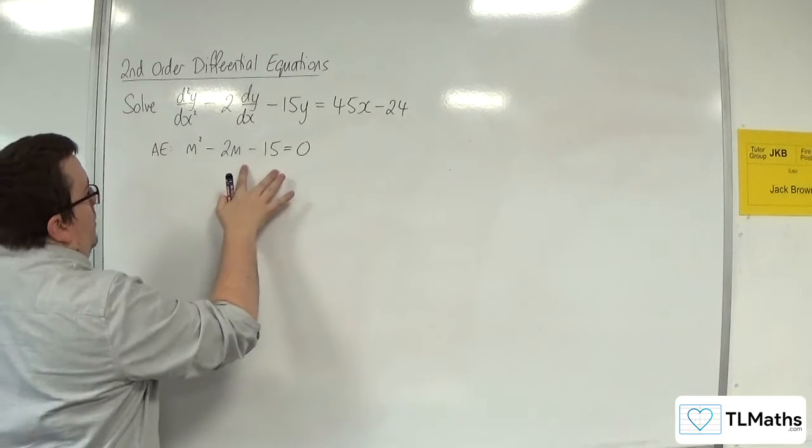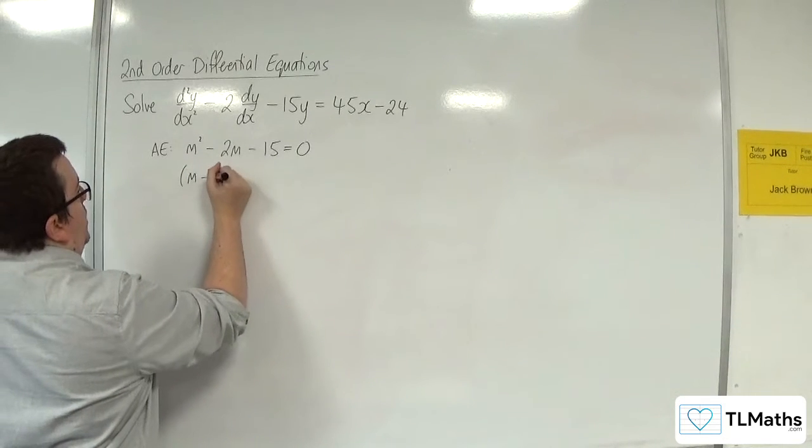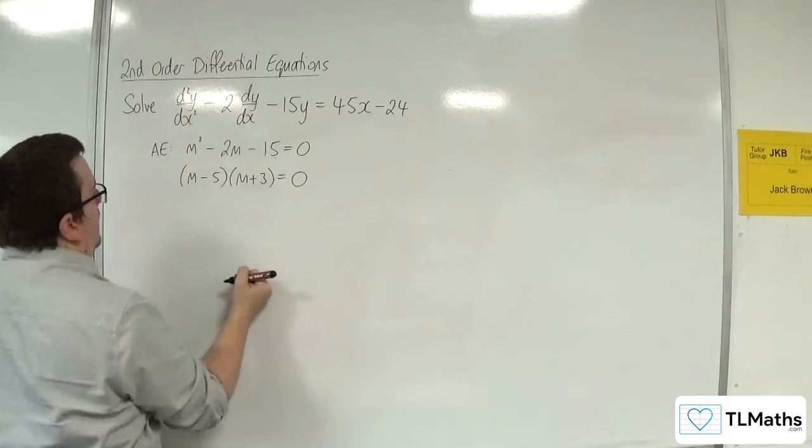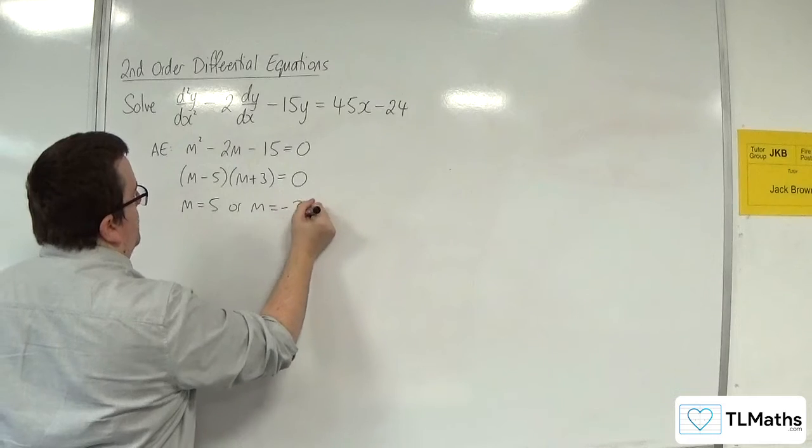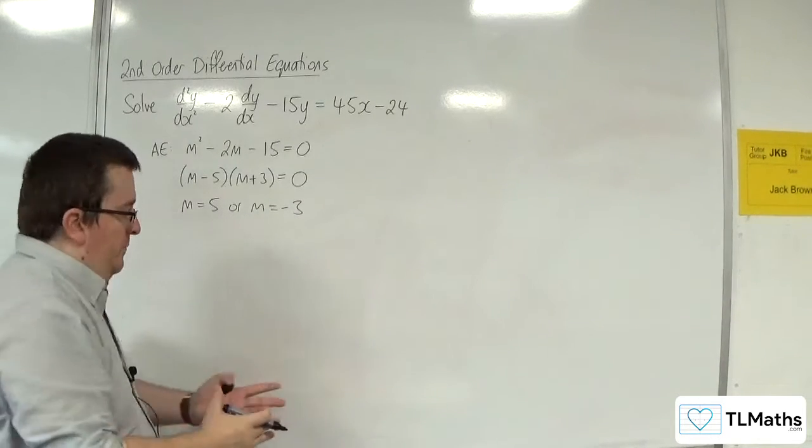So this is a quadratic that factorizes, so (m - 5)(m + 3) = 0, so either m = 5 or m = -3.